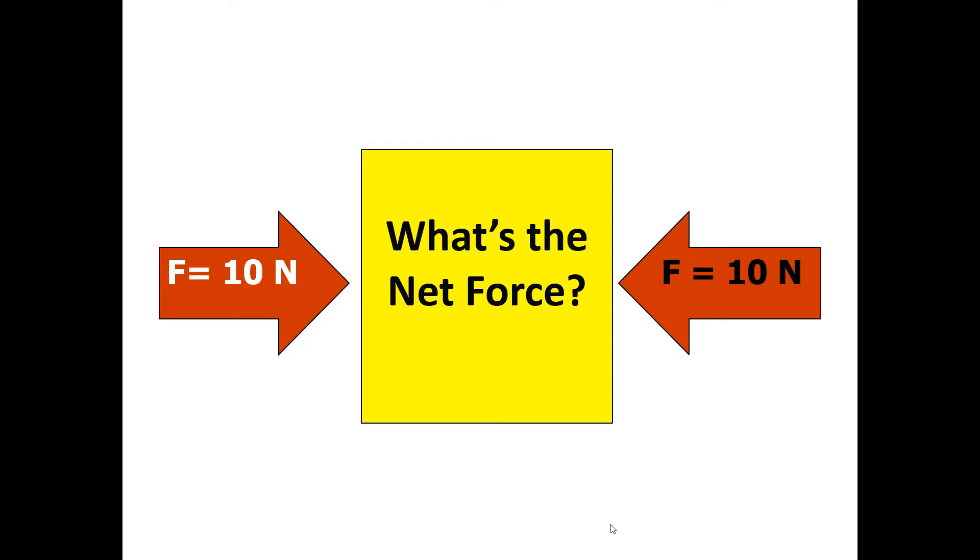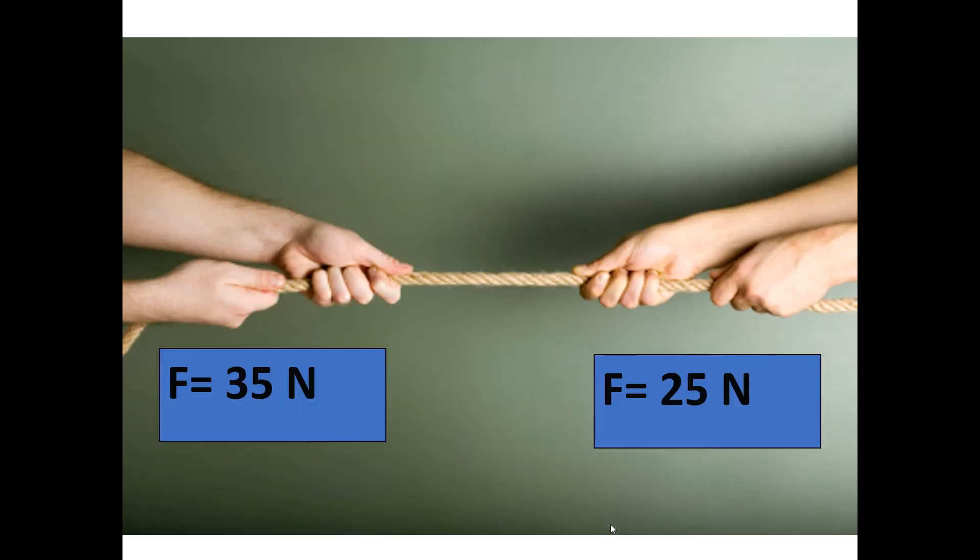All right, let's look at this one. We have 10 Newtons pushing on both sides. These are opposing forces, so to find the net force, you're going to subtract, and 10 minus 10, of course, is 0. So this is what we call a balanced force. Net force is 0. So if I ask you which direction the box is going to move in, you should be able to tell me it's not going to move at all. It's not in motion. And why? Well, because it's a balanced force.